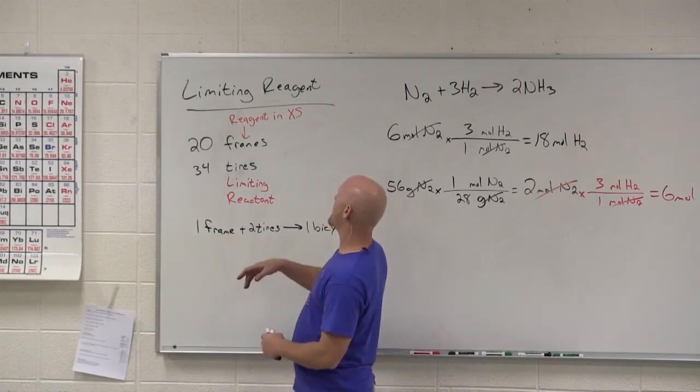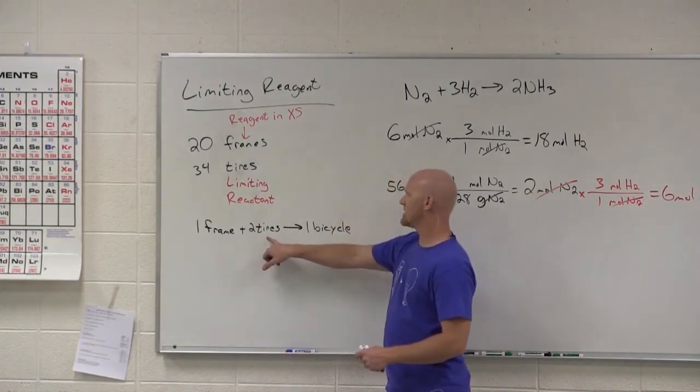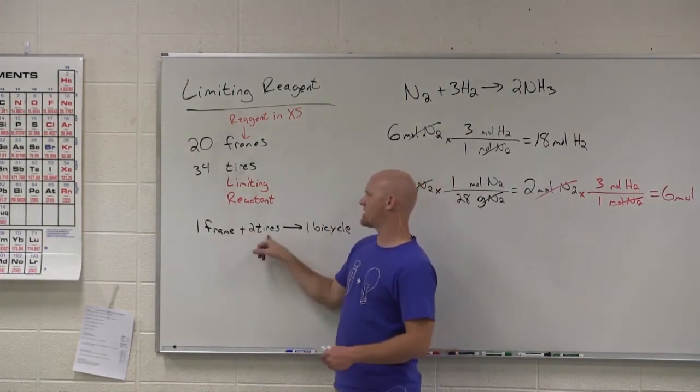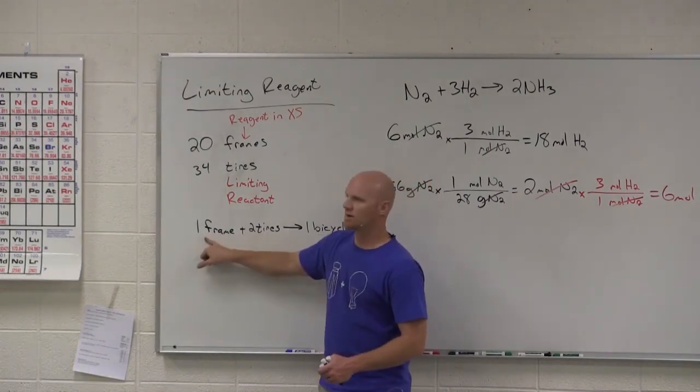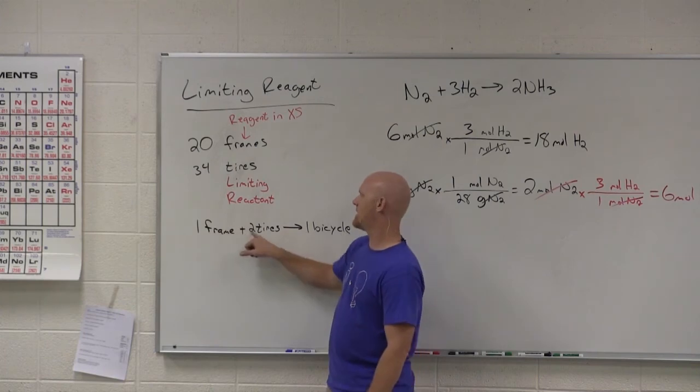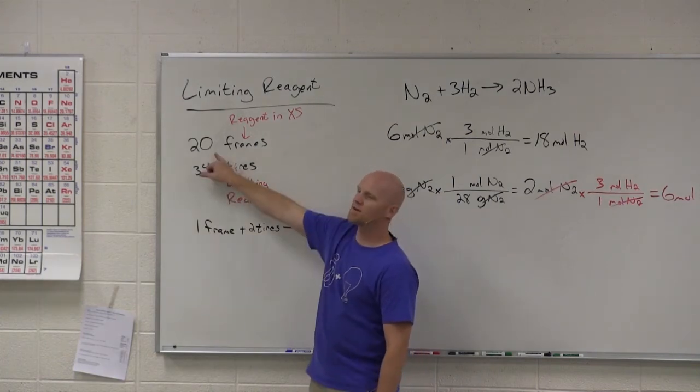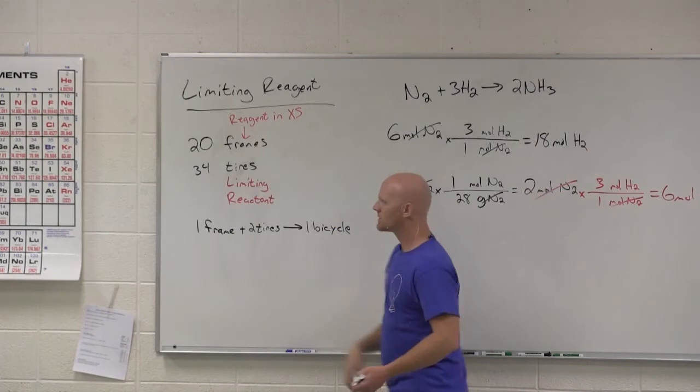Assuming your limiting reactant is used up completely. So, in this case, two tires, for every two tires, you need one frame. If all 34 tires get used up, then how many frames would get used up? Well, half as many. So, 17 get used up. We started with 20. 17 get used up. We have three left. Great. We're going to do the same kind of calculation here.